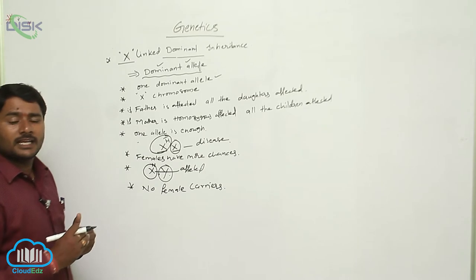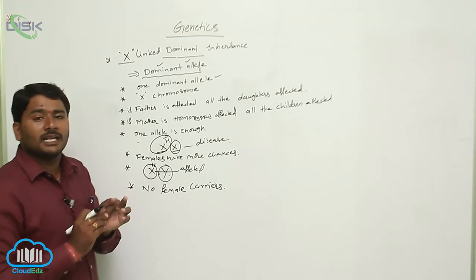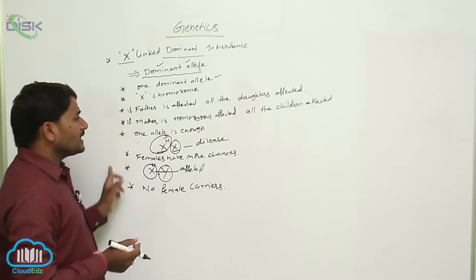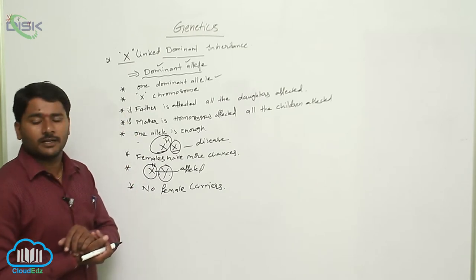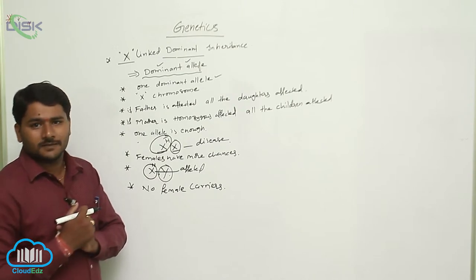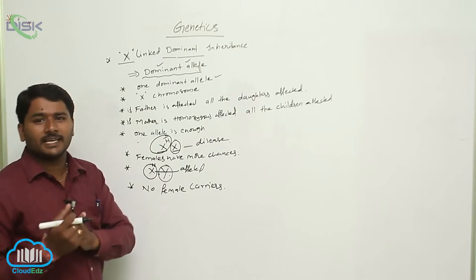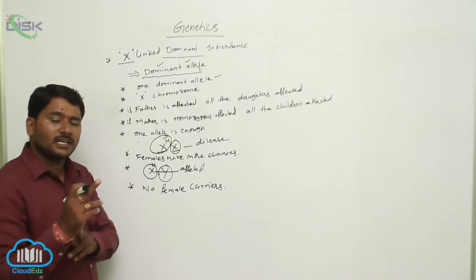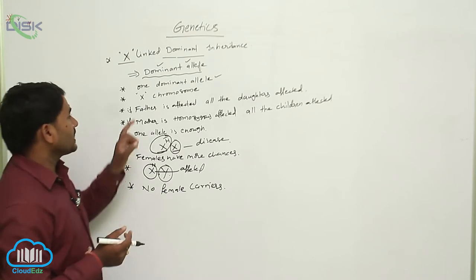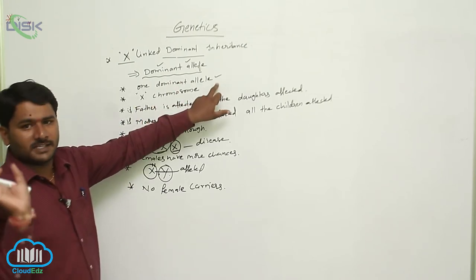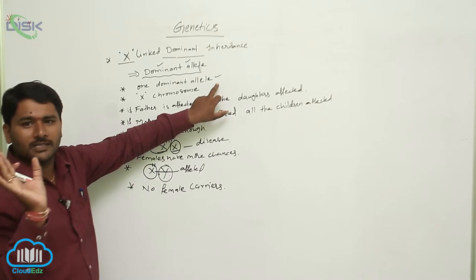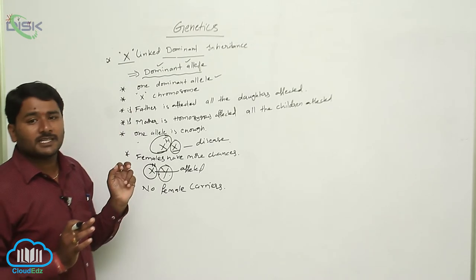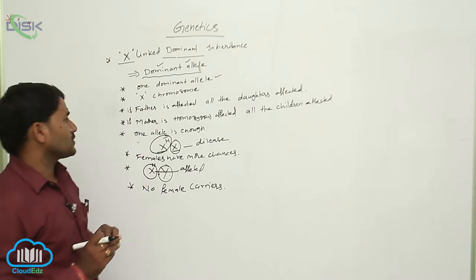A female is called a carrier only if she has one dominant and one recessive allele. But in X-linked dominant disorders, even one dominant allele causes the disease, so there is no chance for a carrier state. If one dominant allele is present in a female, she is affected. If both alleles are dominant, she is also affected. One dominant allele is enough to cause the disease.